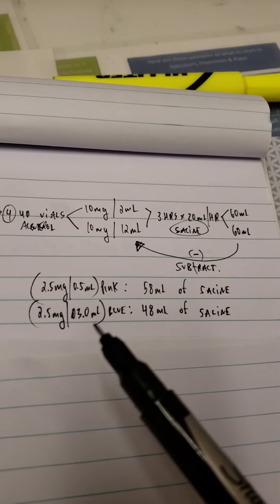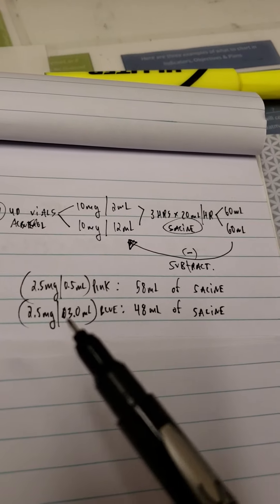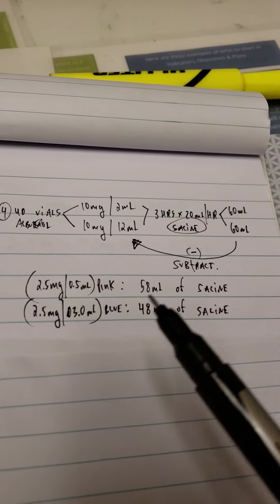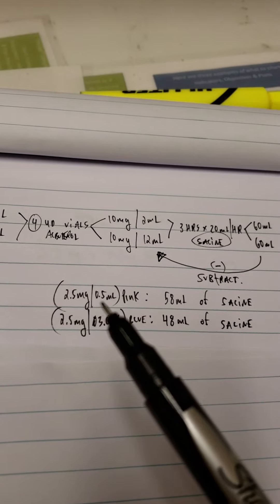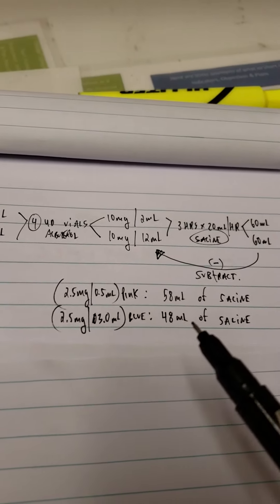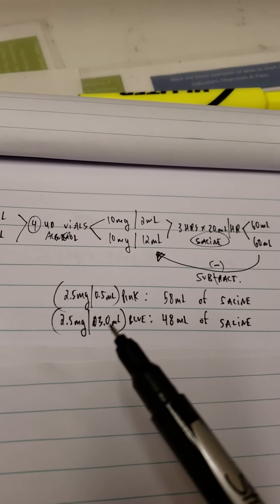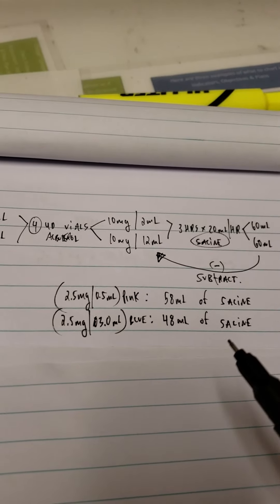already have my two answers. It's either going to take me 58 ml's of saline for the pink albuterol, the 0.5 half ml, or it's going to take me 48 ml's of saline for the three ml's. Okay, and that's it.